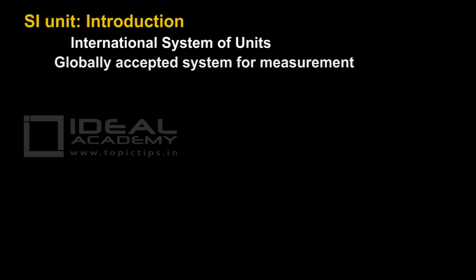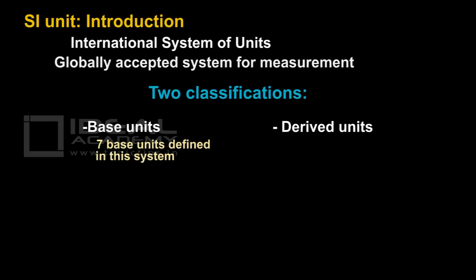Now, in SI units, there are two classifications: the base units and the derived units. We will see what are the seven base units. In SI units, there are seven base units defined in this system and any other units other than base units are called derived units. Derived units are always derived from fundamental units or base units.